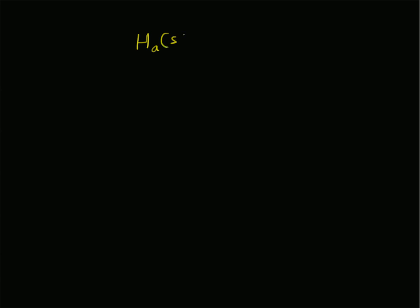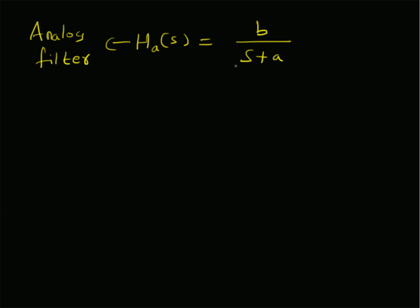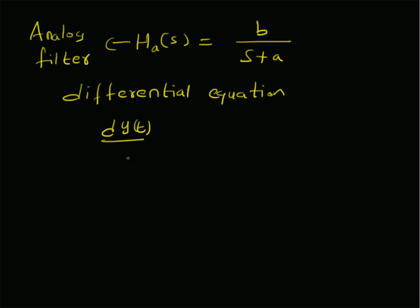Now let us look at the derivation of the bilinear transform for a simple analog filter. Consider an analog filter with transfer function H_a(s) = b / (s + a), which is a single-pole analog filter at s = −a. This filter characterizes the differential equation: dy(t)/dt + a·y(t) = b·x(t).